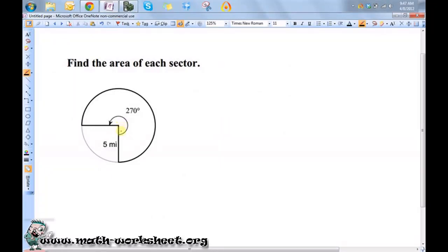Okay, if you want to find the area of the sector and the angle measure is in degrees, then you want to use the following formula. A is equal to theta over 360 times pi r squared.